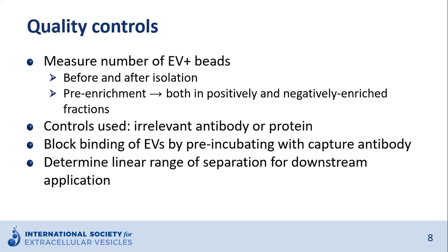What quality controls are required? For example, measuring the number of positive beads before and after isolation, both in the positively and negatively enriched fractions, is important. Capturing with an irrelevant protein — such as an irrelevant antibody — is also required as a quality control. Blocking the binding by pre-incubating samples with the capture antibody is also needed if possible. Depending on the downstream application, the linear range of separation should be determined.